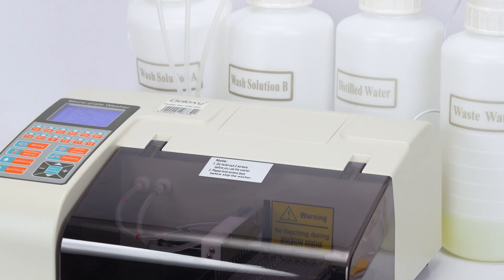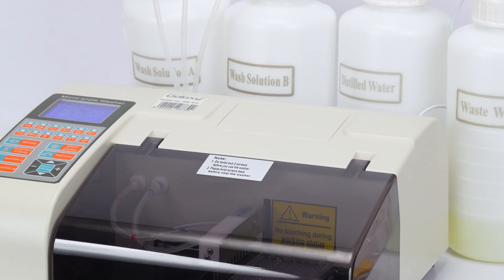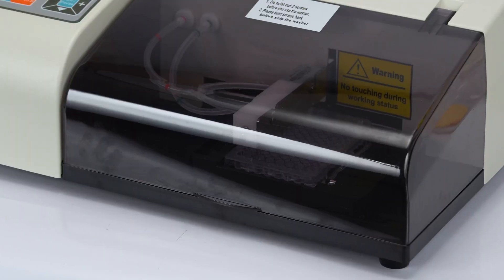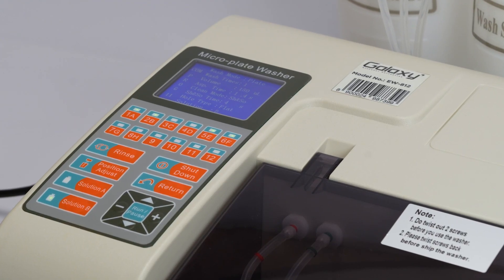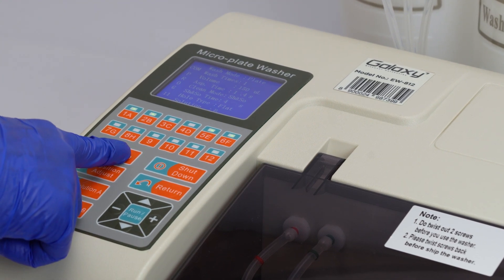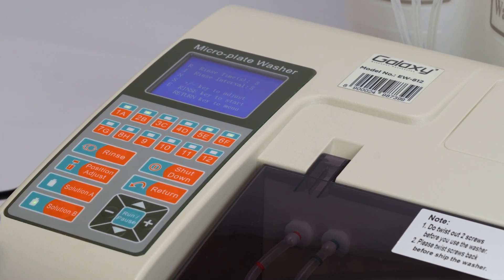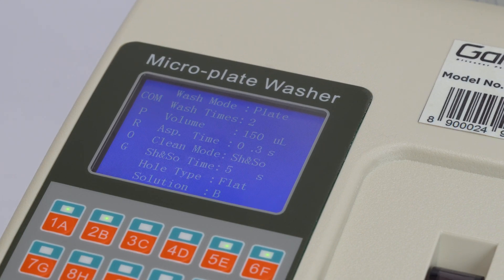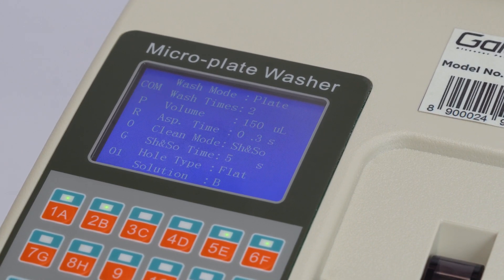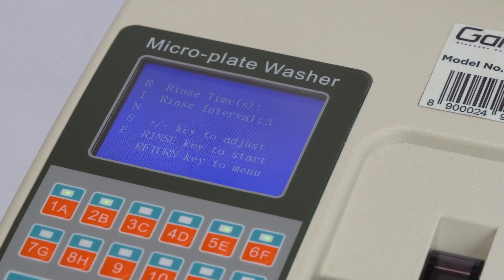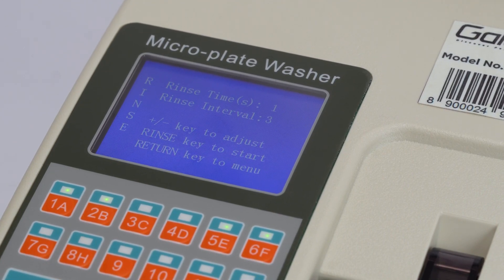To keep your EW812 performing optimally, after the washing process is complete, press the rinse pipe button to prevent the cleaning head and pipes from clogging or crystallizing. When you press the rinse pipe key, the screen will show the rinse pipe time, 1 to 240 seconds, adjustable with the plus and minus keys.